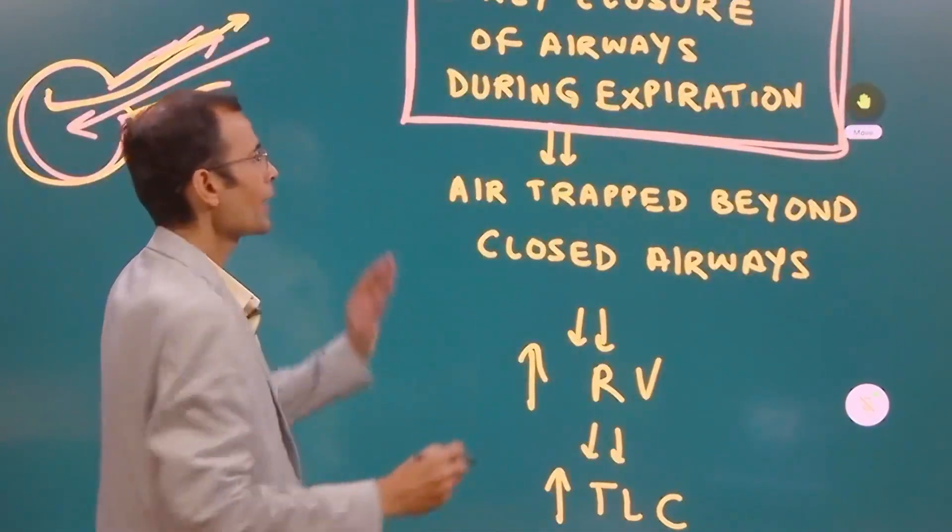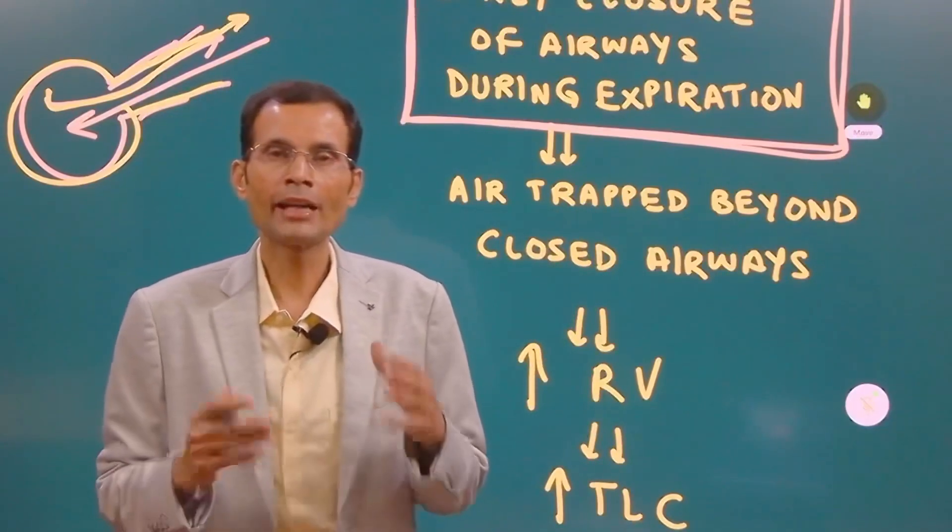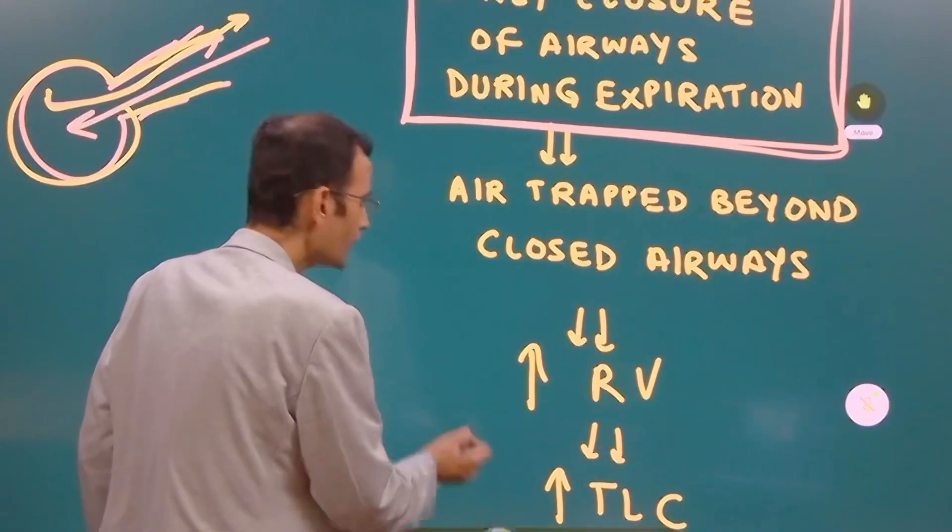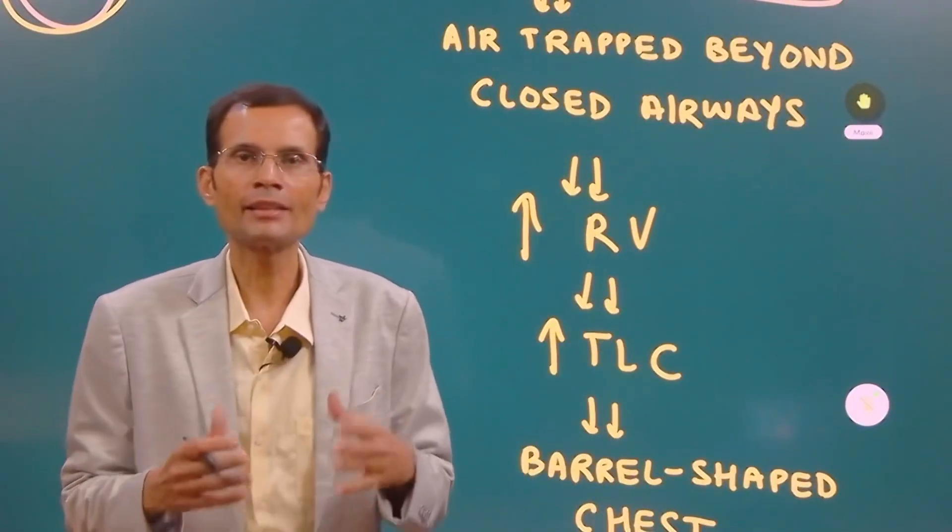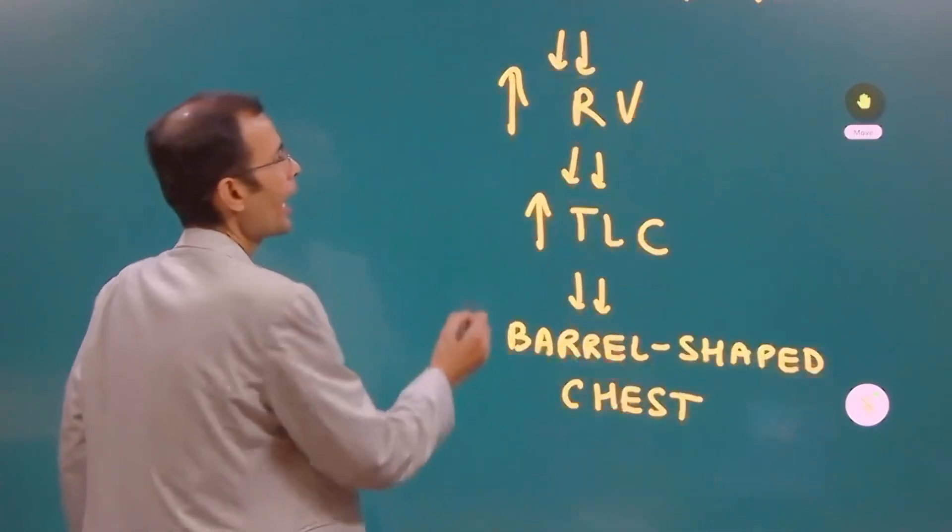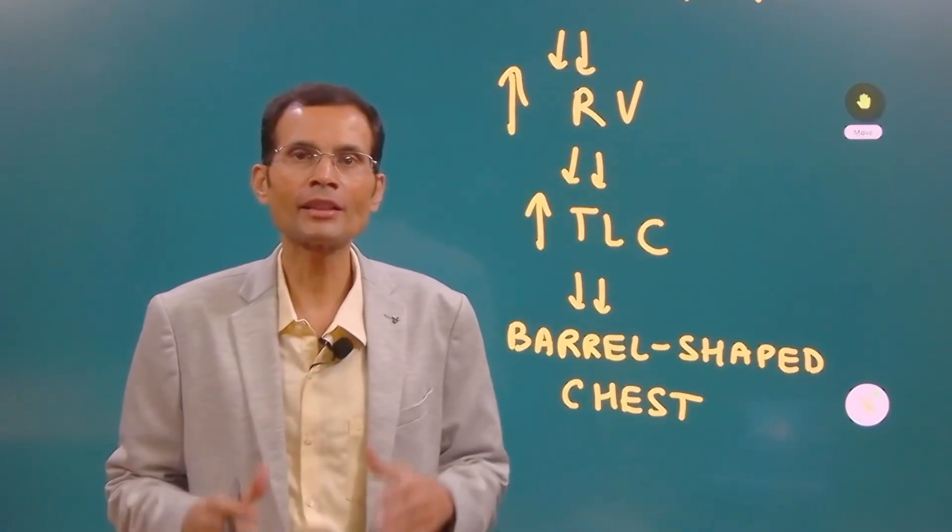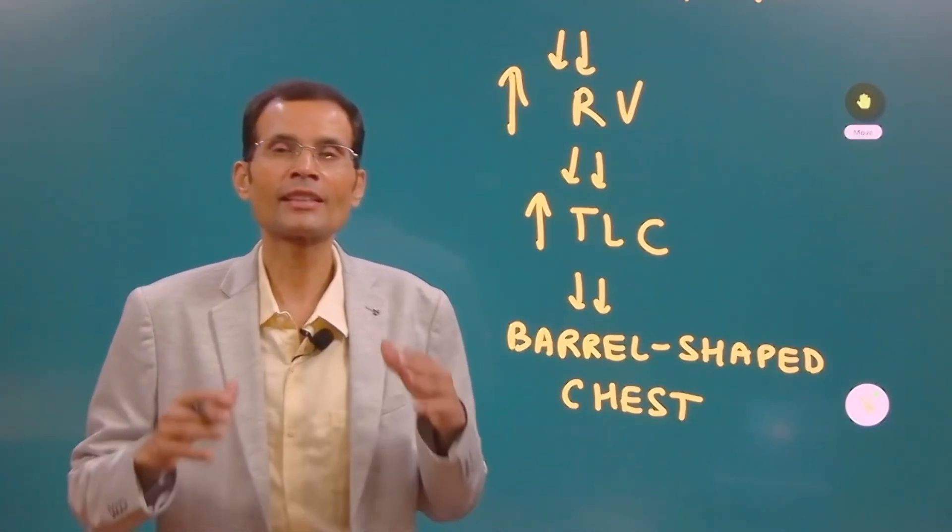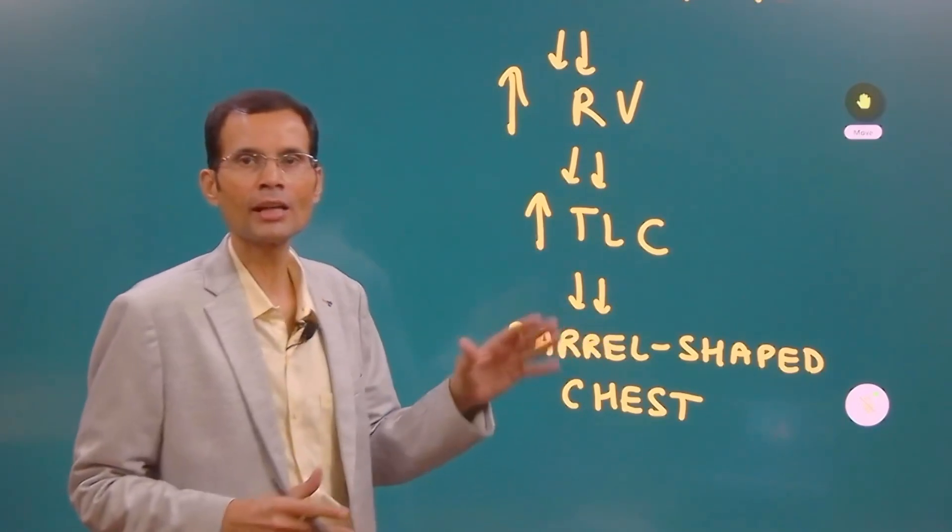Now what is happening is air trapped beyond the closed airways and therefore there is increased residual volume. Obviously air is getting trapped beyond the closed airways. So residual volume increases and gradually because of that the total lung capacity also increases. That's a key feature of emphysema: increase in the total lung capacity.